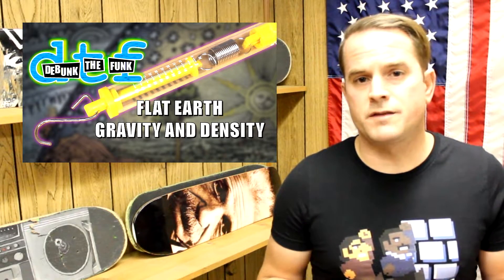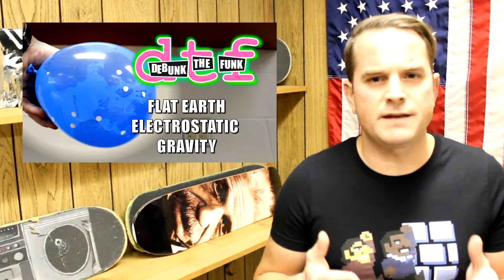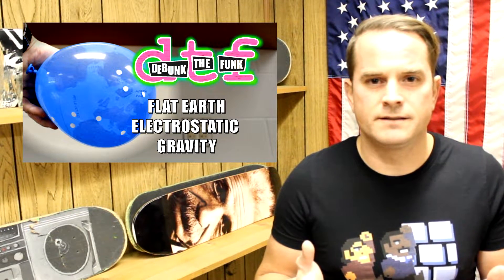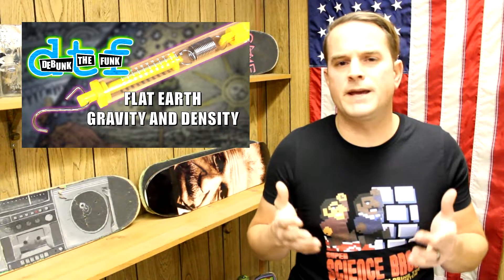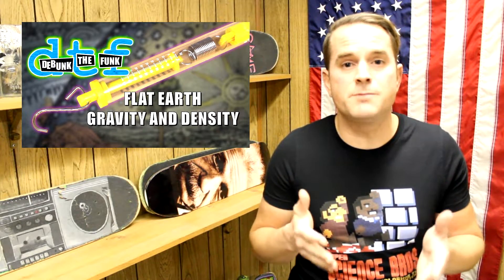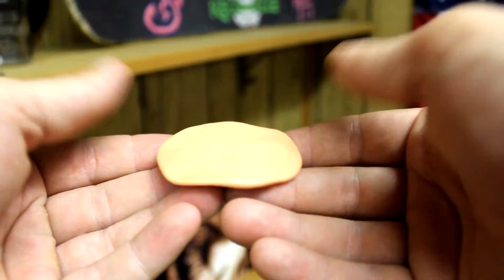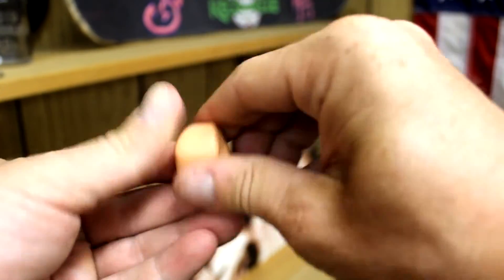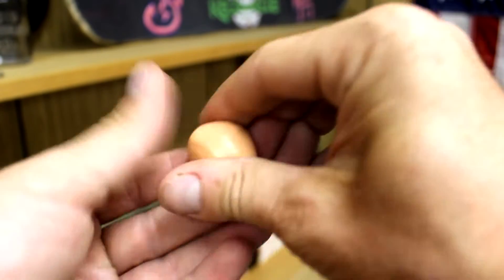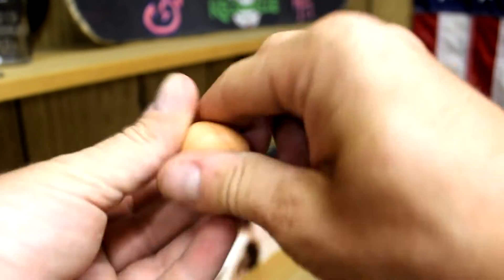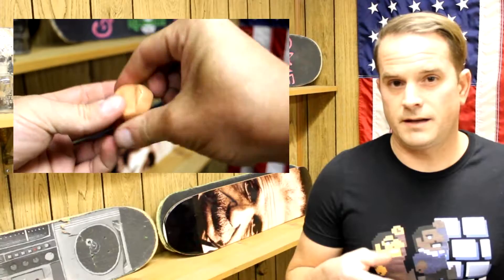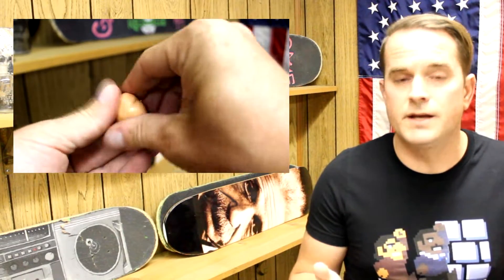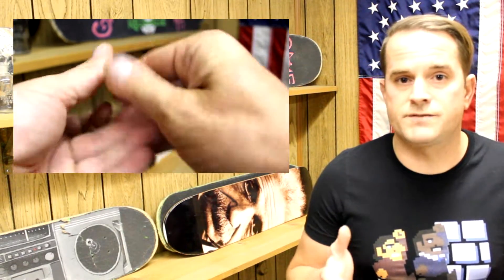In the two most recent episodes of Debunk the Funk, we've been examining how the flat earth idea tries to handle gravity. In Debunk the Funk number 11, we explained why the flat earth idea is incompatible with the force of gravity. That even if an earth were flat, due to mass attracting mass, gravity would pull the matter into the most stable position, minimizing distance, producing the most compacted three-dimensional shape possible. In other words, a flat earth cannot exist if gravity exists because gravity would pull the flat earth into a sphere.